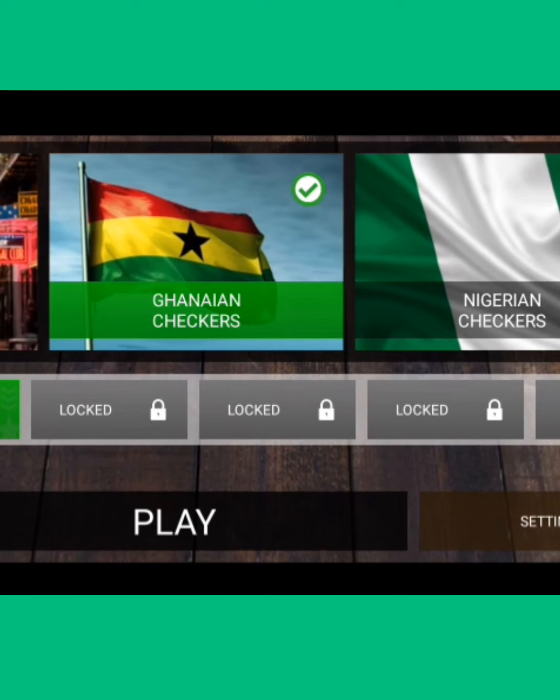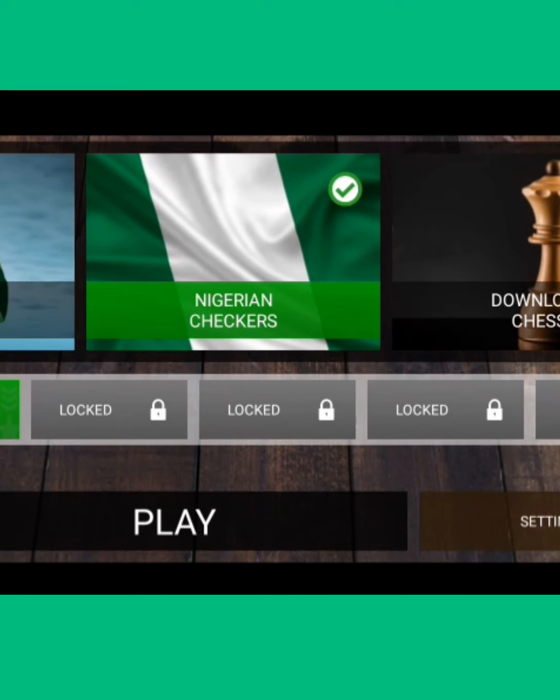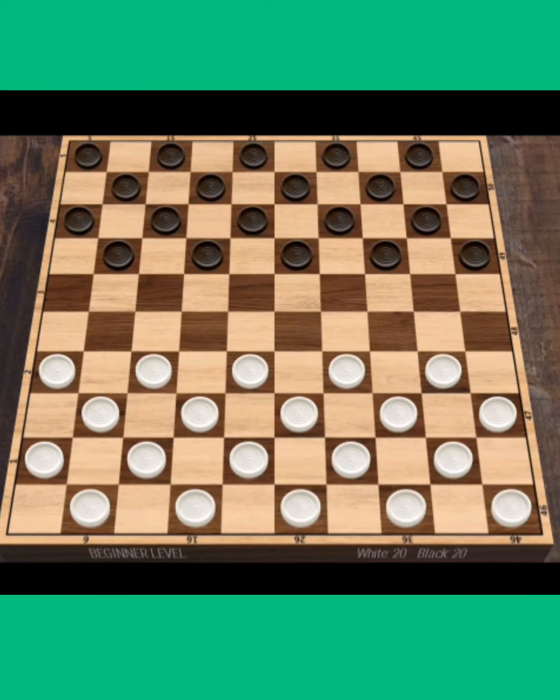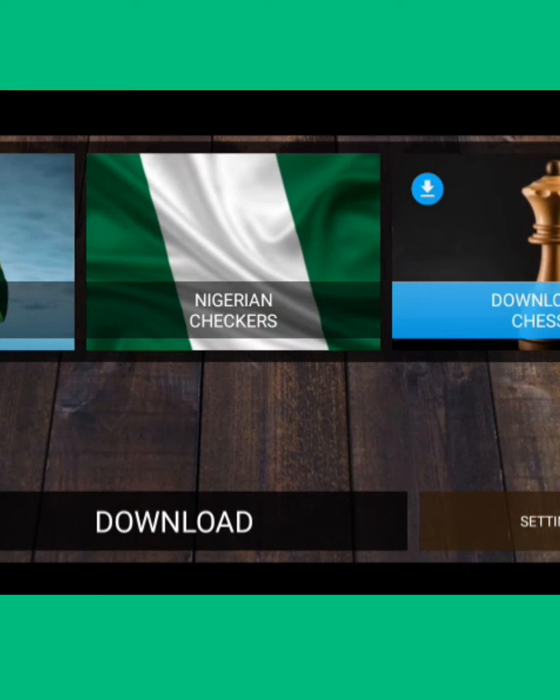You have Ghana or Guyana checkers. You have more opponents. You have Nigeria. You have more opponents as well. And you can download chess if you want.